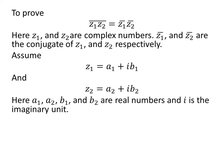To prove the above identity, let us assume z1 is equal to a1 plus i times b1, and z2 is equal to a2 plus i times b2, where a1, a2, b1, and b2 are real numbers and i is the imaginary unit.